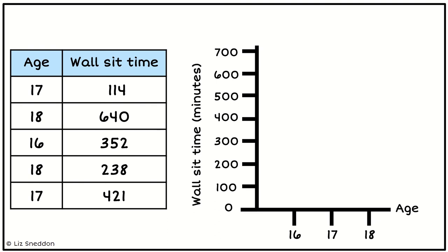Now I need to actually put the coordinate points on. Let's take the first data value. This is a person who has an age of 17 and a wall sit time of 114 seconds. I go across and I've got my age and my wall sit time. I look where those two points meet and I put a dot there. That's my first coordinate point.